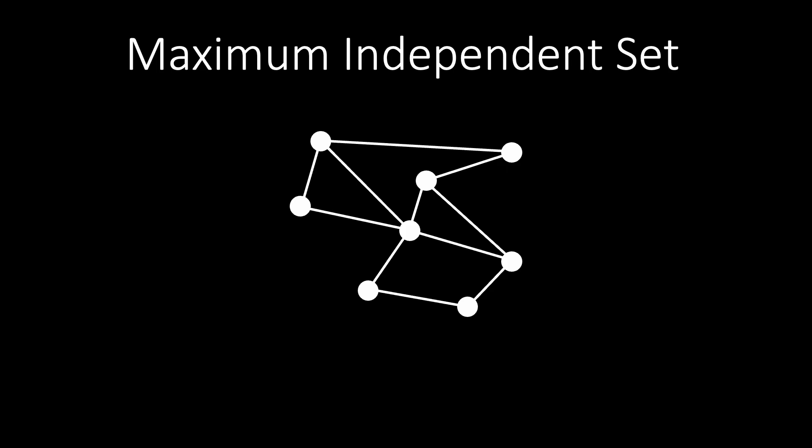Let us look at some more problems in the complexity class NP. A subset of the vertices of a graph forms an independent set if no two of its vertices are connected by an edge. In the maximum independent set problem, our task is to find the largest independent set in a graph. As for vertex cover, the quality measure is the number of vertices in the set.